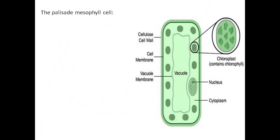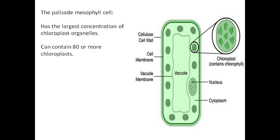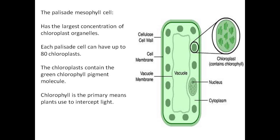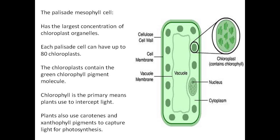The palisade mesophyll cell has the largest concentration of chloroplast organelles and can contain 80 or more chloroplasts. The chloroplasts contain the green chlorophyll pigment molecule. Chlorophyll is the primary means plants use to intercept light. Plants also use carotins and xanthophyll pigments to capture light for photosynthesis.